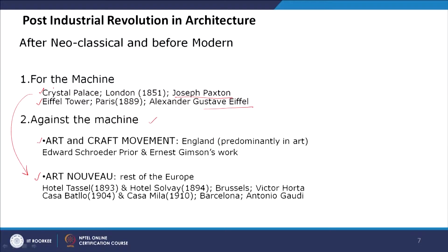In the against-the-machine movement, which we will discuss in the next class, there were two different movements: the Arts and Crafts movement and Art Nouveau, which were extremely opposite to the for-the-machine movement. Artisans, craftsmanship, and ornate design were the key features of these two art and architecture movements.